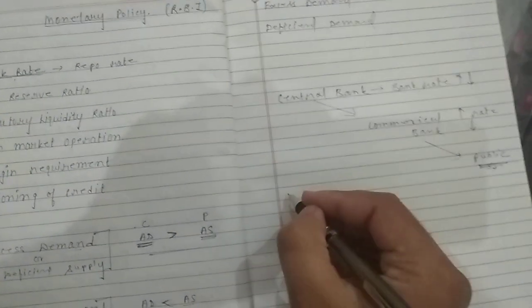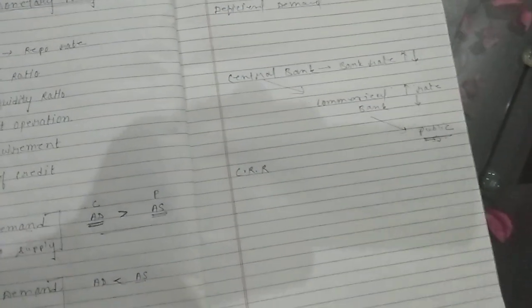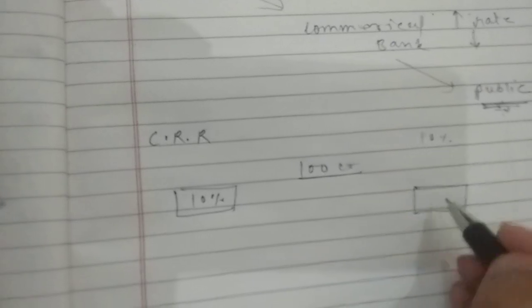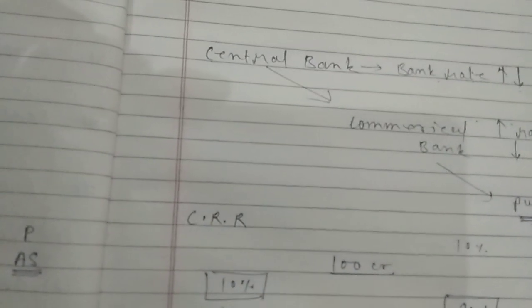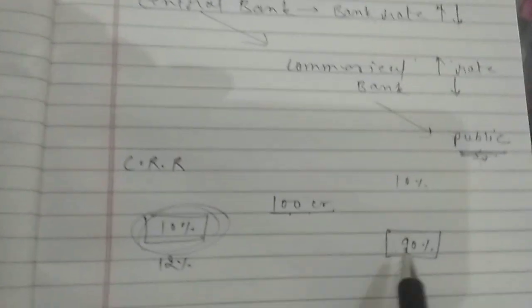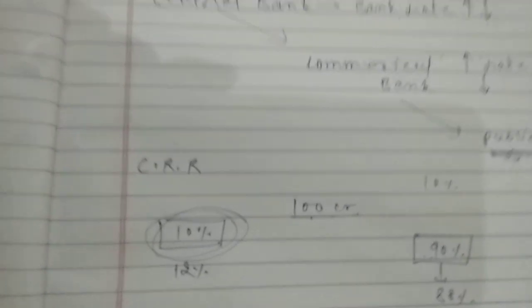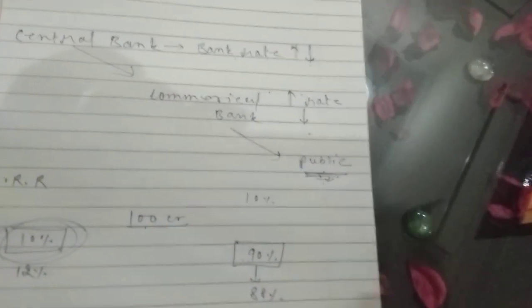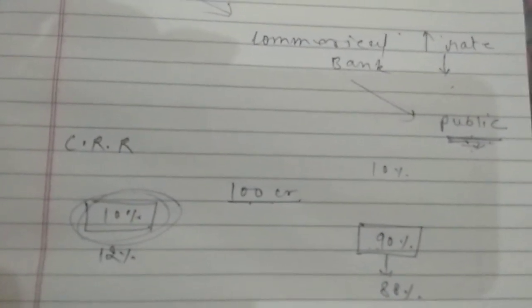The second instrument is Cash Reserve Ratio — CRR. Every bank has to keep a fixed percentage of its total deposits with RBI. Suppose I am a bank with 100 crore rupees, and RBI fixes CRR at 10% — that means I will deposit 10 crore rupees with RBI as a fixed reserve. Now if there is excess demand in the market and funds are already high, RBI increases the CRR from 10% to 12%. This means more money goes to RBI, and the percentage of funds available to banks for providing credit decreases compared to before — resulting in fewer funds going into the market. When fewer funds reach the market, people get less credit.